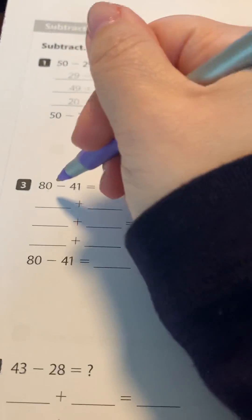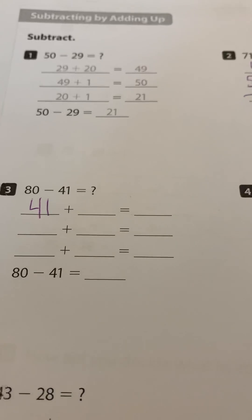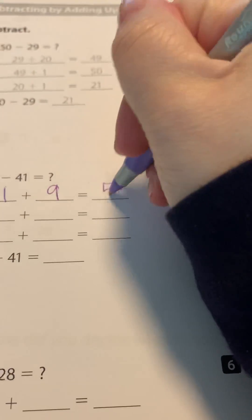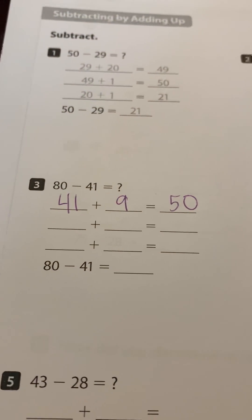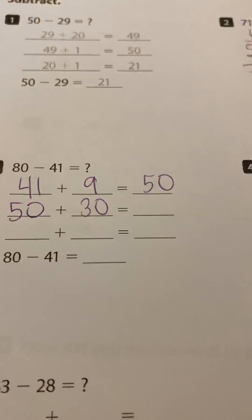So I'm going to start with 41. Now I want to think of an easy number I can add. So I'm going to add nine so I can get to 50.